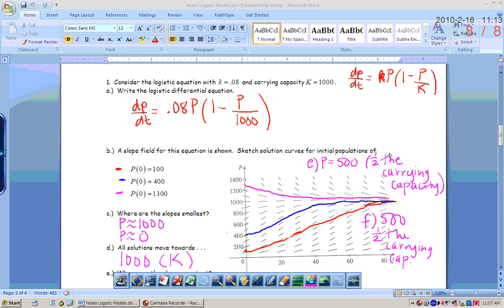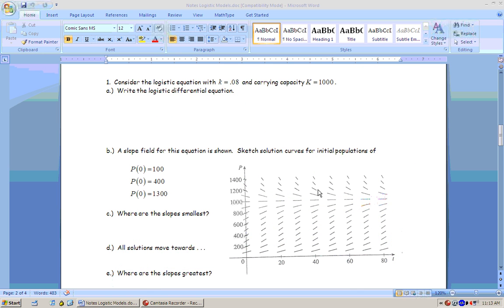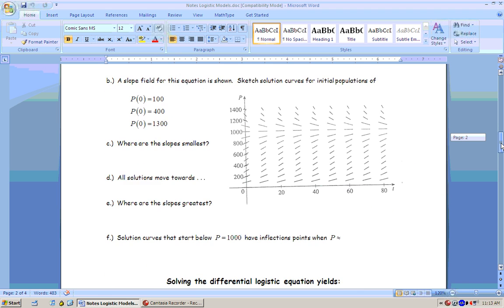The reason for that is the slopes are at a maximum, and if your slope or your first derivative is at a maximum, what's happening to the second derivative? It's changing signs. So it all kind of relates together. Your greatest slopes and your inflection points will always occur at half the carrying capacity.